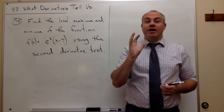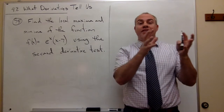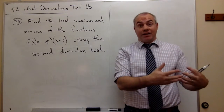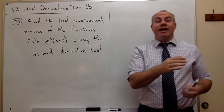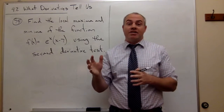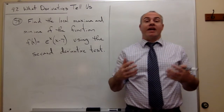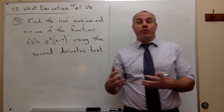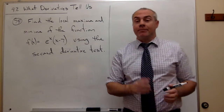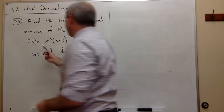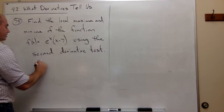After we find our critical points, we're going to take those critical points and plug them into the second derivative. We plug them in, and then depending on if we get a positive number or a negative number, we'll know whether or not we have a local maximum or a local minimum. So let's do it. First, let's take the derivative of our function and find our critical points.